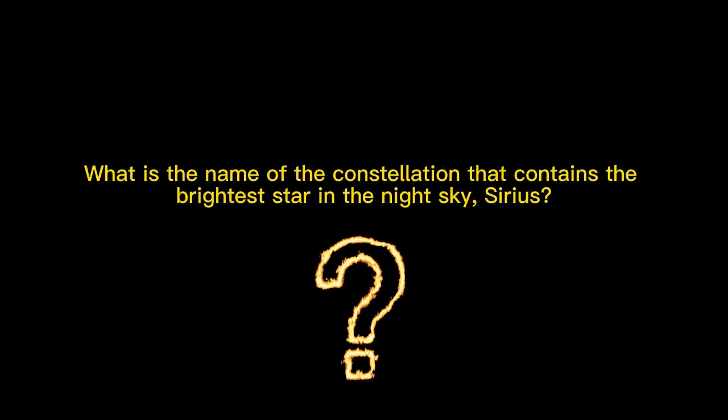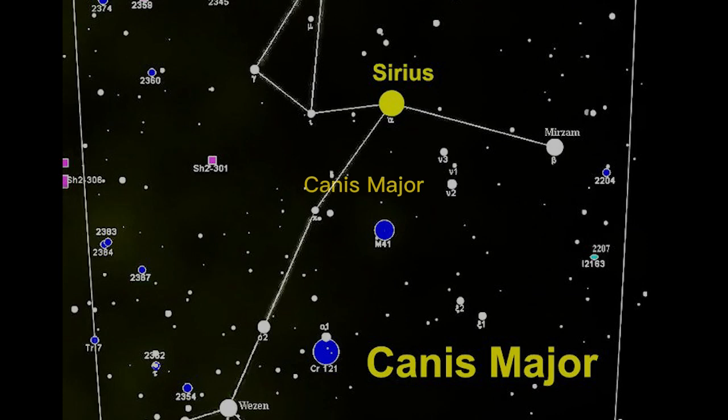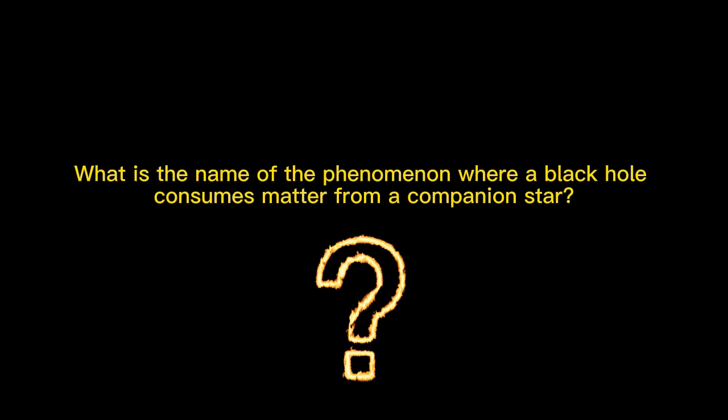What is the name of the constellation that contains the brightest star in the night sky, Sirius? Canis Major. What is the name of the phenomenon where a black hole consumes matter from a companion star? Accretion.